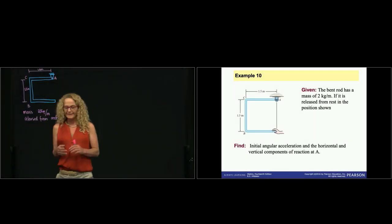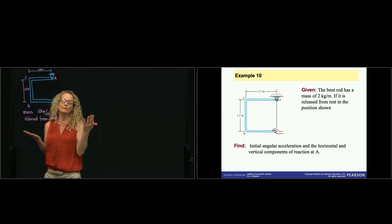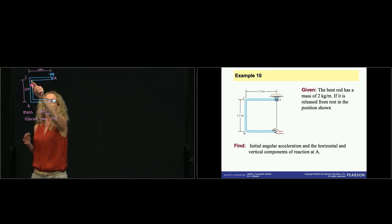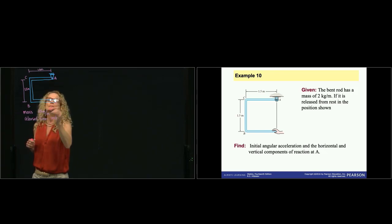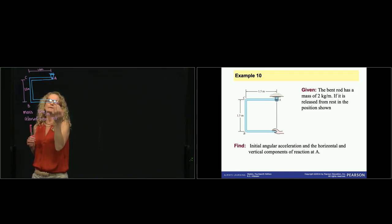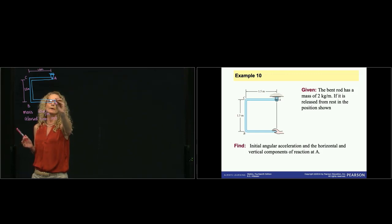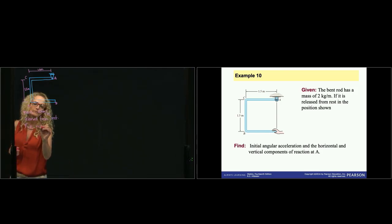In this problem, given the bent bar, we have a rigid body composed of three bars. One from A to C, two from C to B, and a third one. All of them have a length of 1.5 meters and the thickness is neglected. We have a mass of 2 kilograms per meter, so it's a linear distribution of mass. It's released from rest, and we are asked to find the initial angular acceleration.